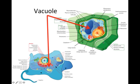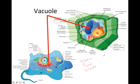Next is the vacuole. In a plant cell the vacuole is quite large, while in an animal cell it's quite small. The vacuole holds water, and it also stores food, carbohydrates, other molecules the cell might need, and some waste products. The vacuole in a plant cell is usually much larger than in an animal cell.